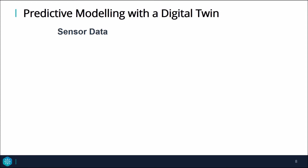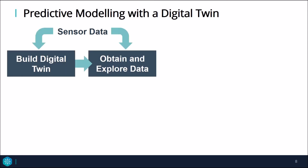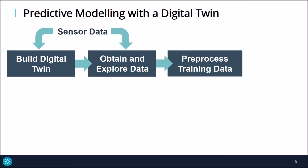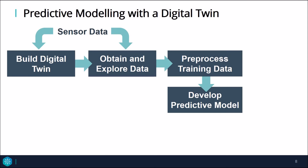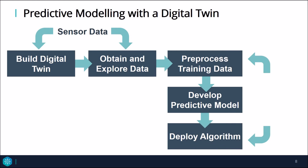So first we start with sensor data, which we use to build the digital twin as well as perform analysis on the data. From our digital twin and data analytics, we can gather data for different failure scenarios, which we use as the data for our predictive algorithm. We then develop the predictive model, and once we are satisfied with its performance, we can deploy it. This should be seen as an iterative process, where we use real event data from the plant to retrain our algorithm and update our digital twin accordingly.